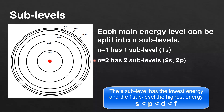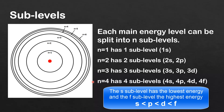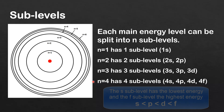N equals 2 has 2 sublevels: a 2s and a 2p sublevel. N equals 3 has 3 sublevels: a 3s, a 3p, and a 3d sublevel. N equals 4 has 4 sublevels: a 4s, a 4p, a 4d, and a 4f.